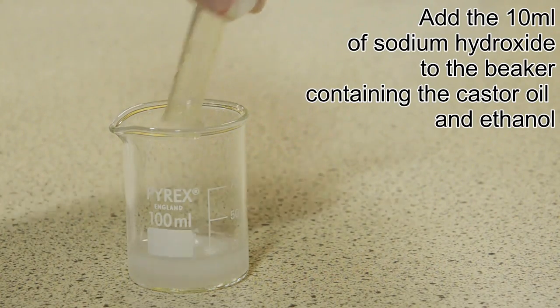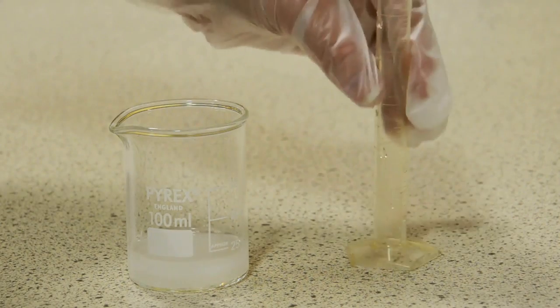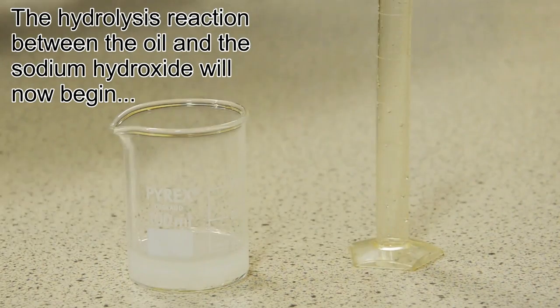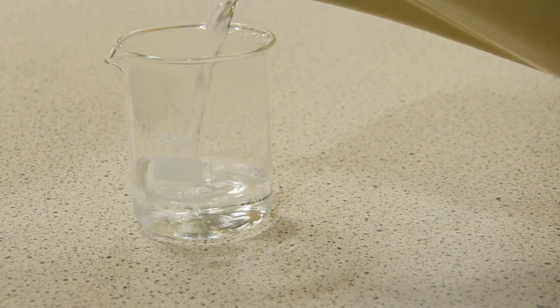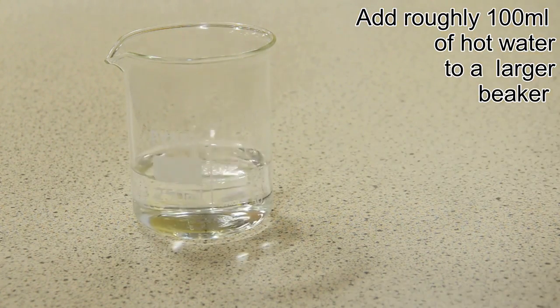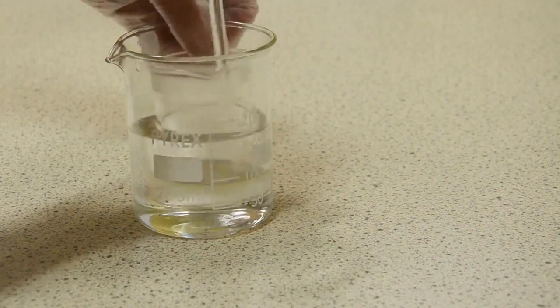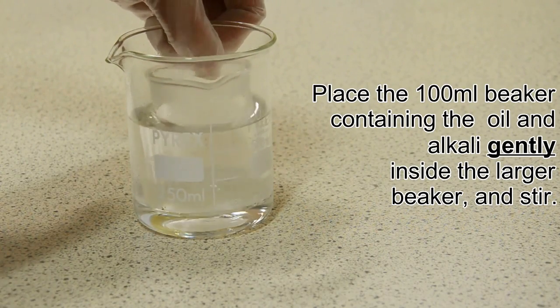We're now going to speed up the reaction by standing the beaker containing the ethanol, sodium hydroxide, and castor oil in hot water and stirring. I was stirring the mixture of oil and alkali.